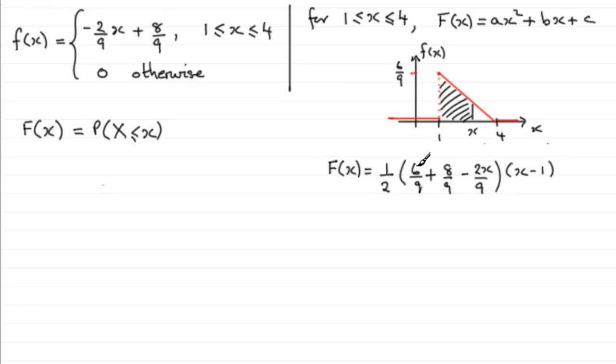So if we add up 6 ninths and 8 ninths, that's 14 ninths. And then multiply by a half, we're going to get 7 ninths. If we halve the minus 2x over 9, we're going to get minus x over 9. And that's multiplied by x minus 1.